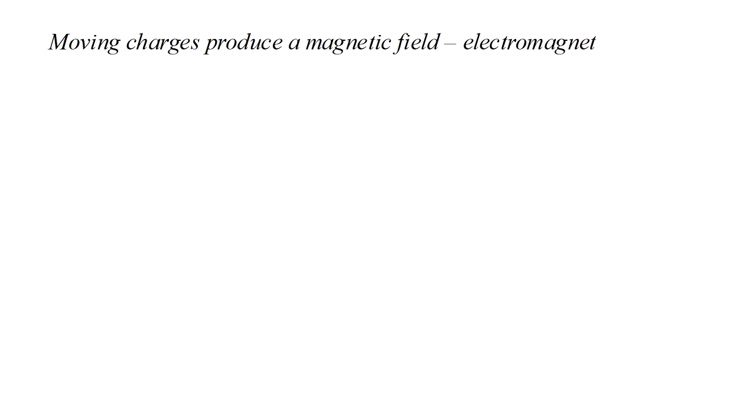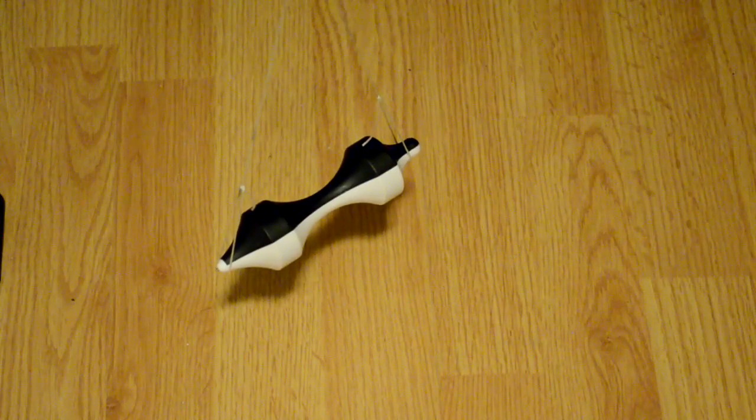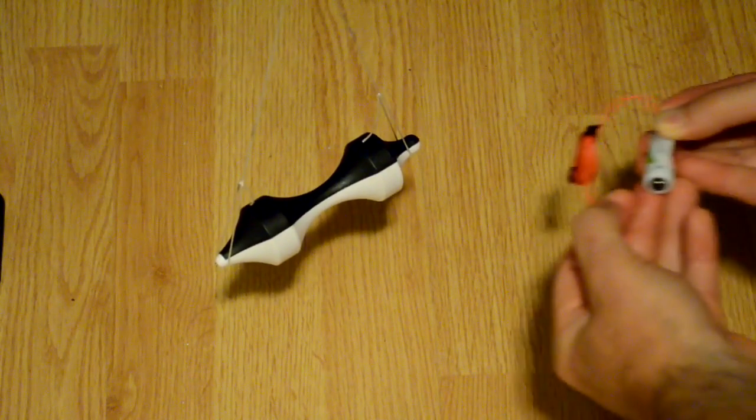Moving charges produce a magnetic field, which is the basis of the electromagnet. Suppose we have a loop of wire with a bunch of electrons moving around it. This will act more or less like a little bar magnet with north and south poles.